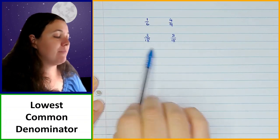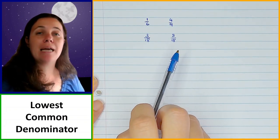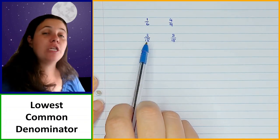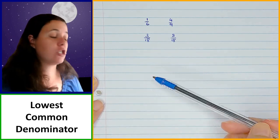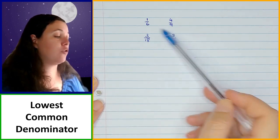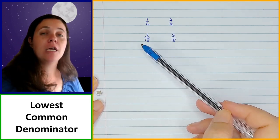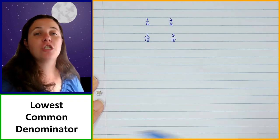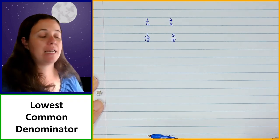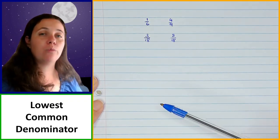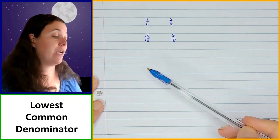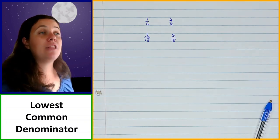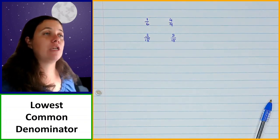So this is something you're going to have to do when you are doing adding and subtracting fractions as well. You need to first make sure that you find the lowest common denominator and convert fractions so that they have all got the same denominator as each other, so that you'll then be able to add and subtract the fractions, just like we had to do when we were comparing fractions.